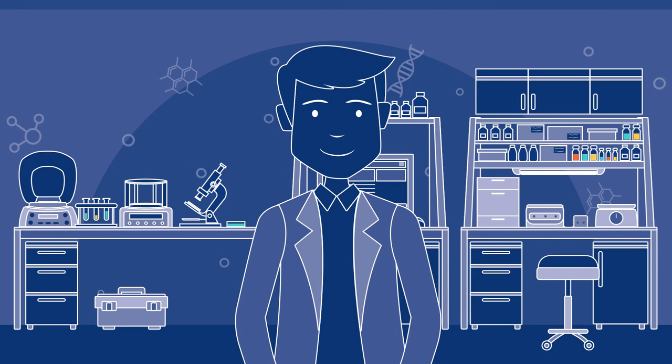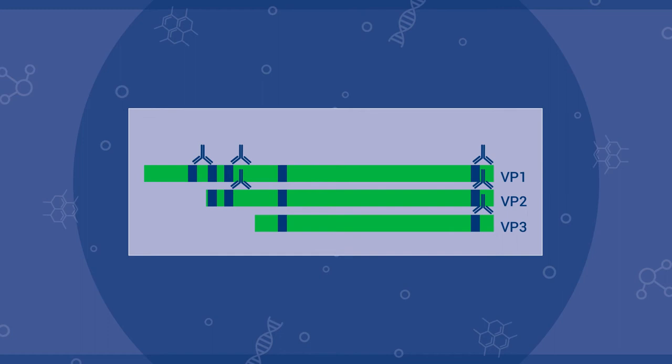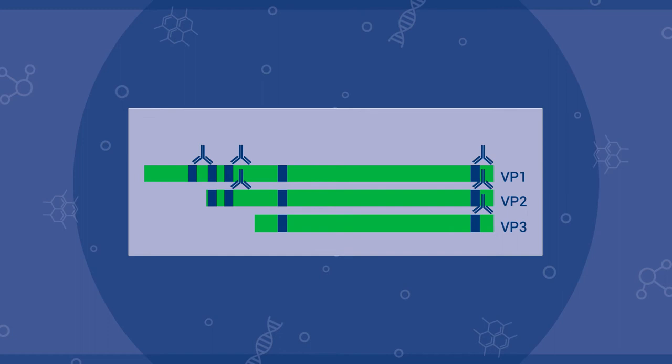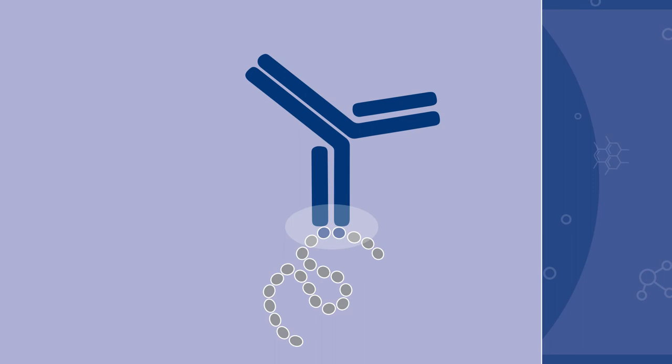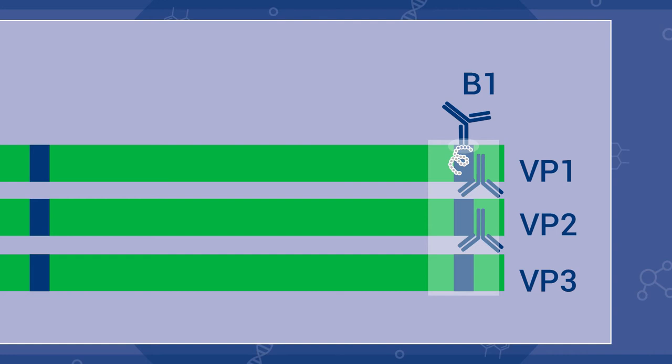The different areas of application are determined by the different fundamental features of the two antibody types. AAV capsid protein antibodies recognize linear epitopes consisting of neighboring amino acids within the VP proteins. They have high cross-reactivity because VP capsid proteins possess a high sequence similarity.